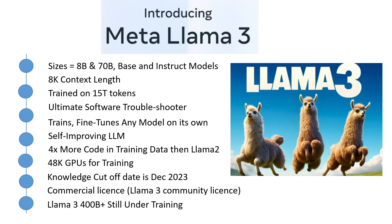The training data of this model is also something to write home about. To train the best language model, the curation of a large, high-quality training dataset is paramount. Llama 3 is pre-trained on over 15 trillion tokens collected from publicly available sources. Their training dataset is seven times larger than that used for Llama 2 and includes four times more code. Over 5% of the training data consists of high-quality non-English data covering over 30 languages, though English performance remains paramount.